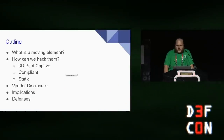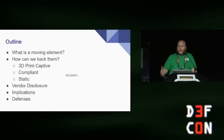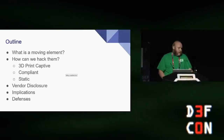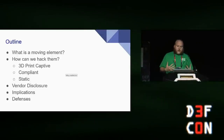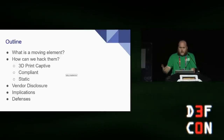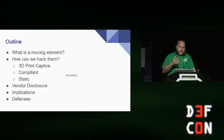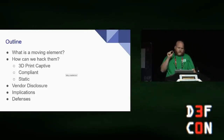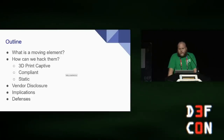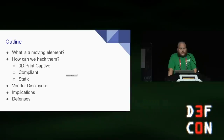To get started, we'll give a brief overview of what we're going to talk about. We'll first introduce what is a moving element and why it's used, go over some of the more naive ways to hack them like a 3D printed cap development and a compliant mechanism, and then get into the big reveal — a way to do it with a static, non-moving piece of metal that will actually actuate these mechanisms. We'll talk about the vendor disclosure process and some of the implications and defenses.